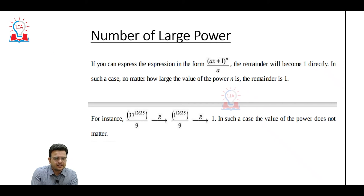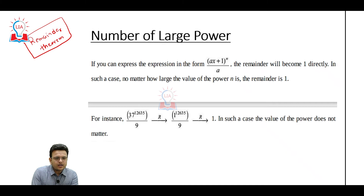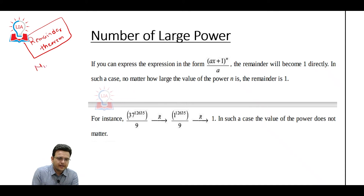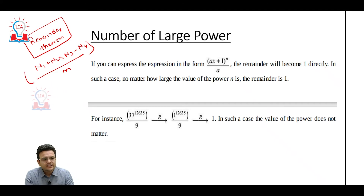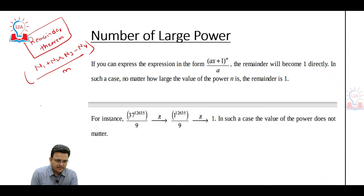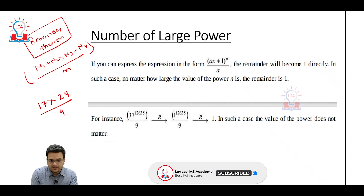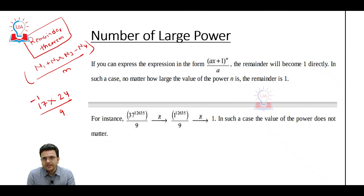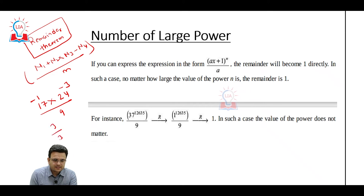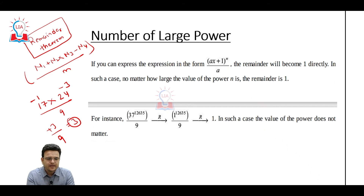So to summarize: first, remainder theorem is applicable for subtraction, addition, multiplication, and division — given n1 + n2 × n3 − n4 divided by M, we can easily get the remainder. Second, we talked about getting a remainder using the negative aspect. For example, dividing 17 × 24 by 9 — either we use remainder 8, or we consider −1 and −3, giving (−1) × (−3) = +3, so answer is 3.